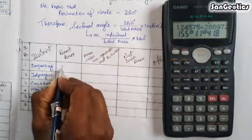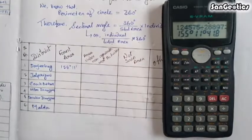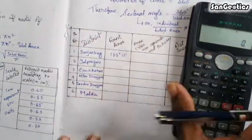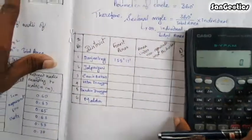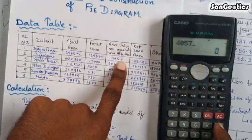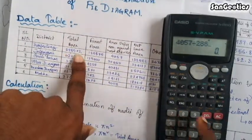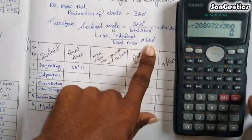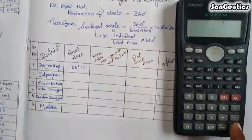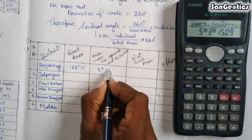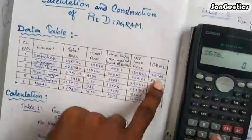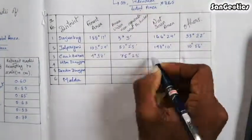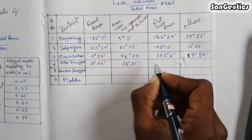Next, the area under non-agricultural activities of Darjeeling district: 4457 / 288972 × 360° = 5° 3'. Similarly, calculate the remaining sectoral angles for all rows and columns of each district.